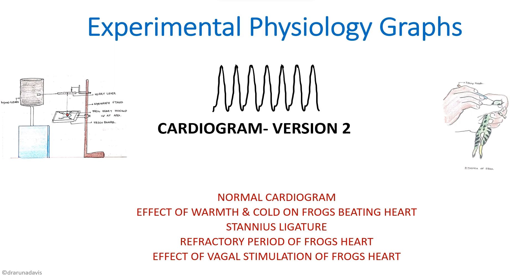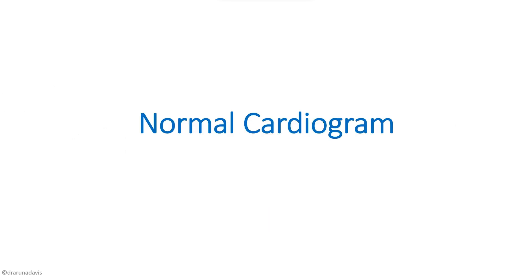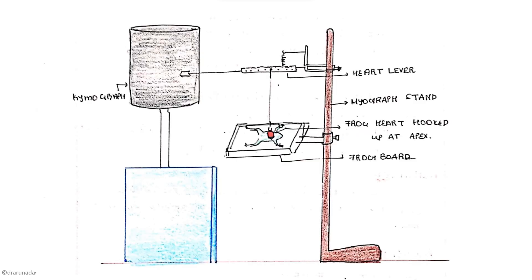In this video we are going to discuss the experiment physiology graphs, especially that of the frog's cardiogram. This is the experimental setup while we record the normal cardiogram. Here you can see a frog whose heart we have dissected out and suspended on Starling's heart lever.